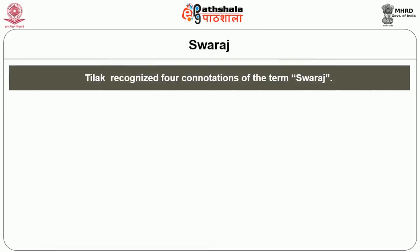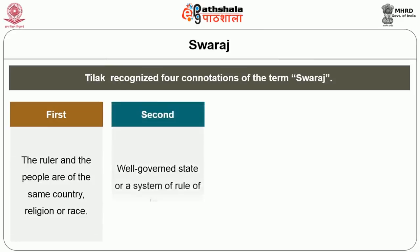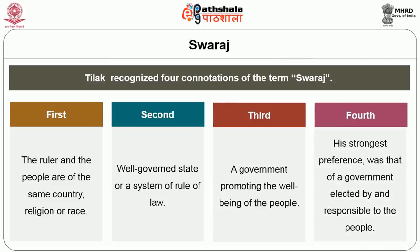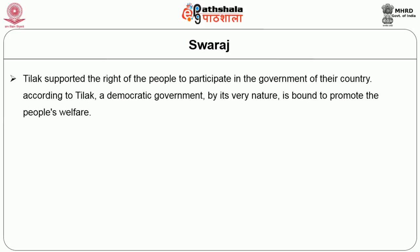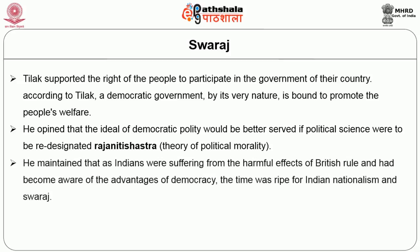Tilak recognised four connotations of the term Swaraj. First, it meant that the ruler and people are of the same country, religion or race. Second, it refers to a well-organised state or system of rule of law. Third, it means a government promoting the well-being of the people. Fourth, and for which Tilak had his strongest preference, was a government elected by and responsible to the people. Tilak supported the right of the people to participate in the government of their country. He opined that the ideal of democratic polity would be better served if political science were to be re-designated as Rajneeti Shastra. He further maintained that as Indians were suffering from harmful effects of British rule and had become aware of the advantages of democracy, the time was ripe for Indian nationalism and Swaraj.